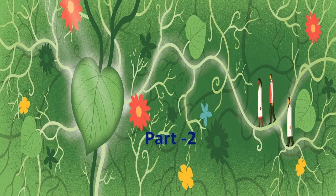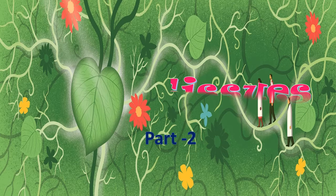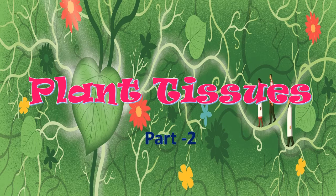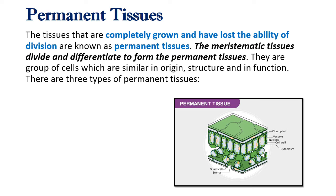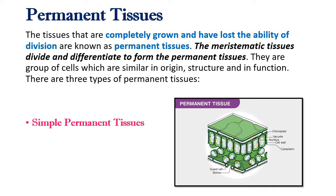In the previous video, plant tissues part 1, we studied meristematic tissue in detail. In this video I will be mentioning the function and characteristics of permanent tissues. The tissues that are completely grown and have lost the ability of division are called permanent tissues. The meristematic tissues divide and differentiate to form the permanent tissues.